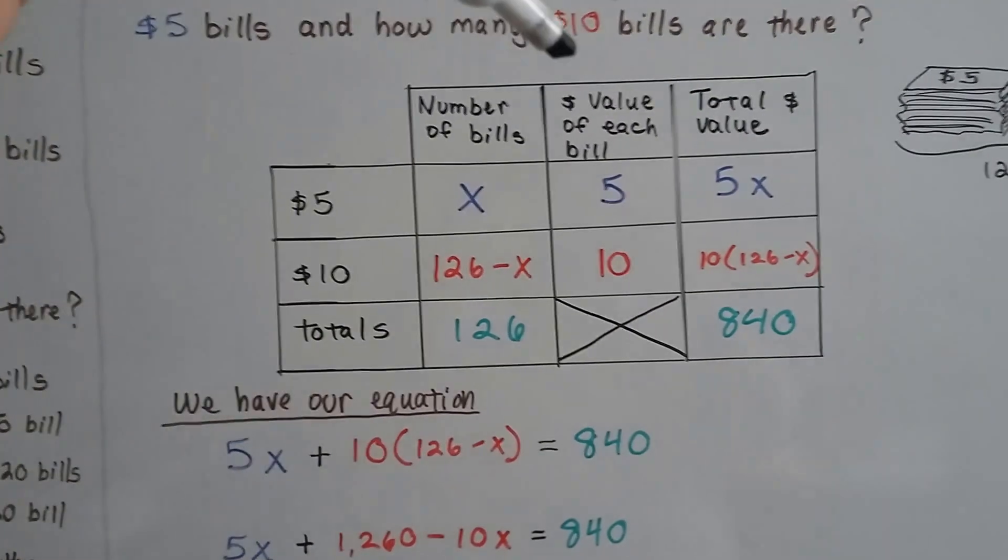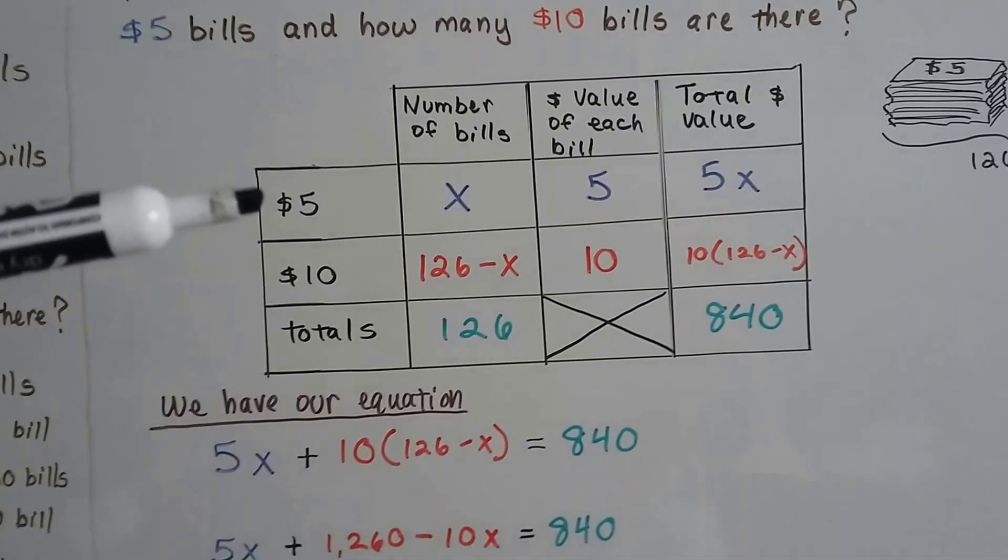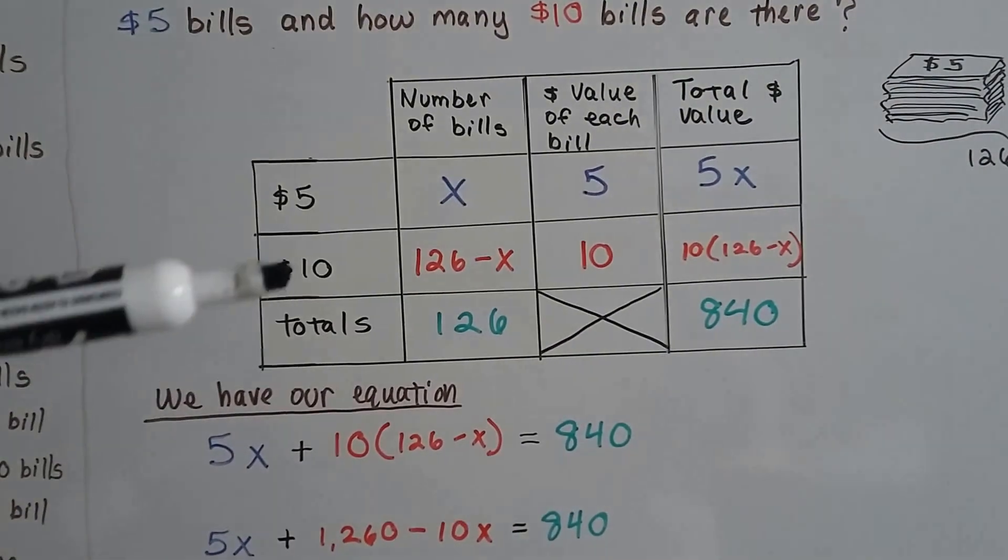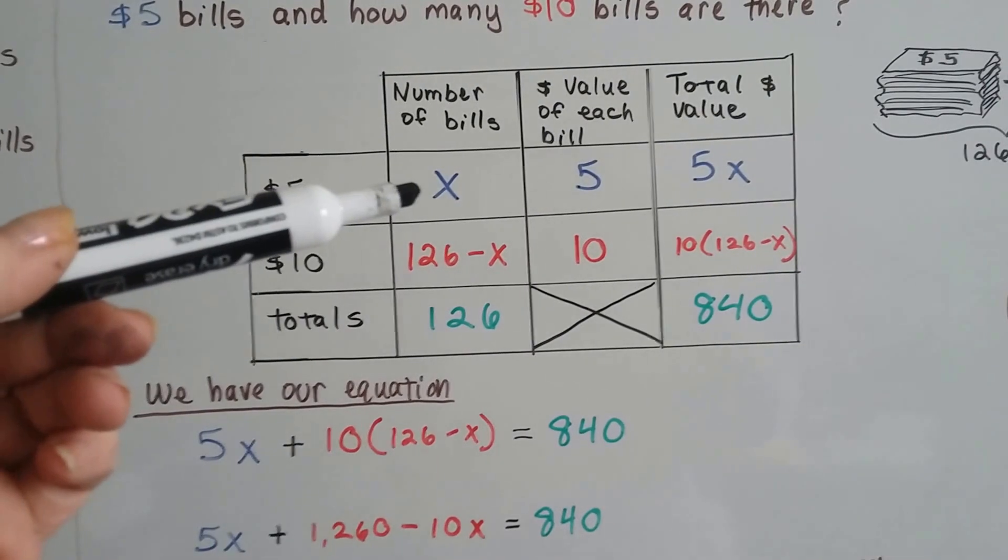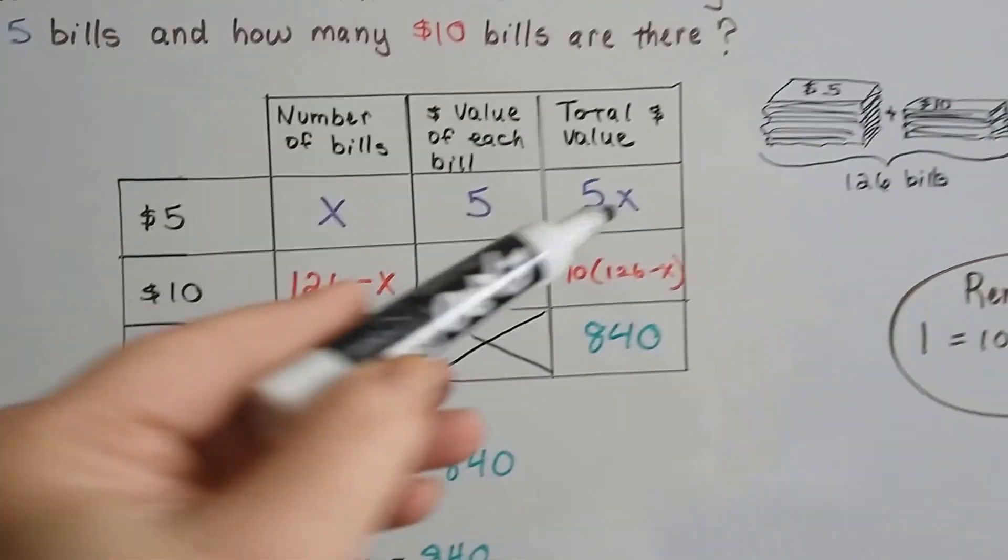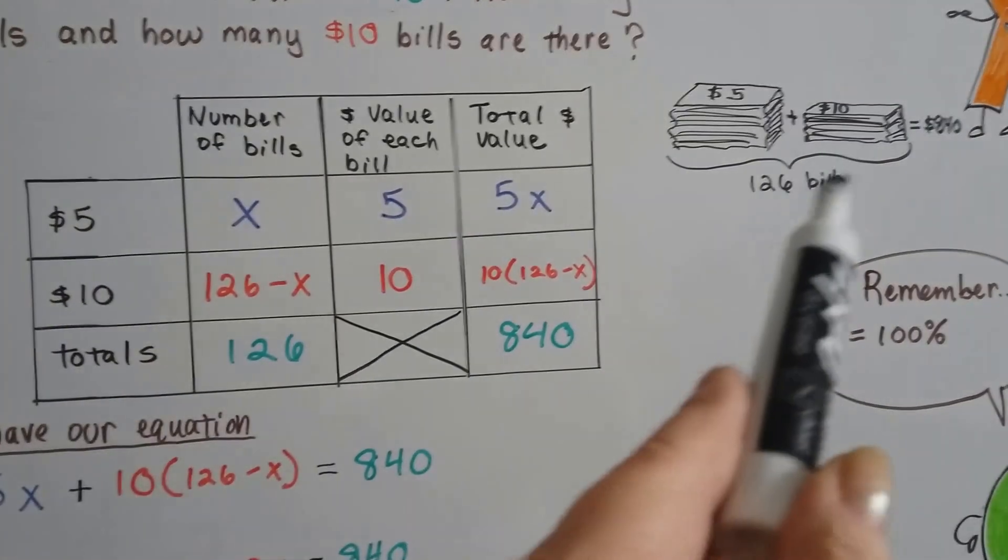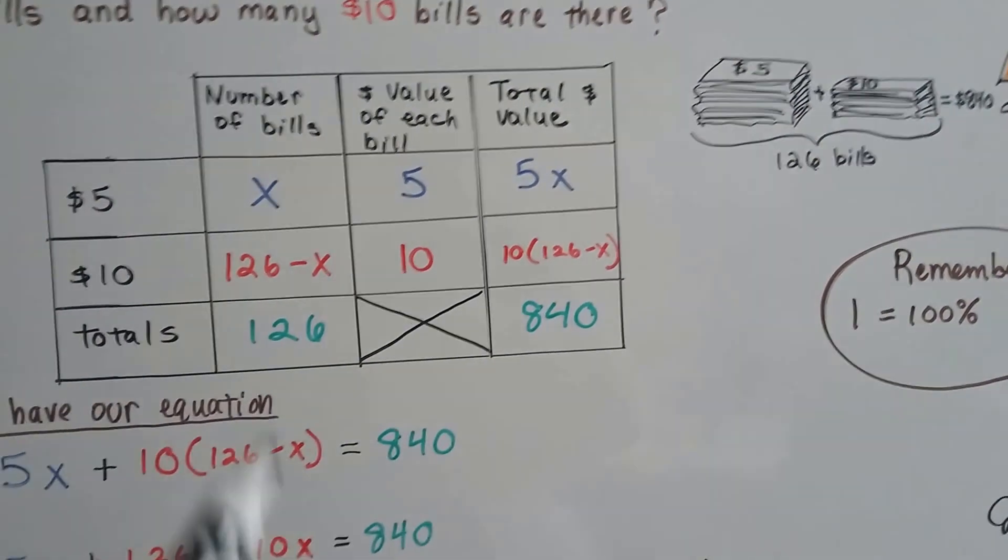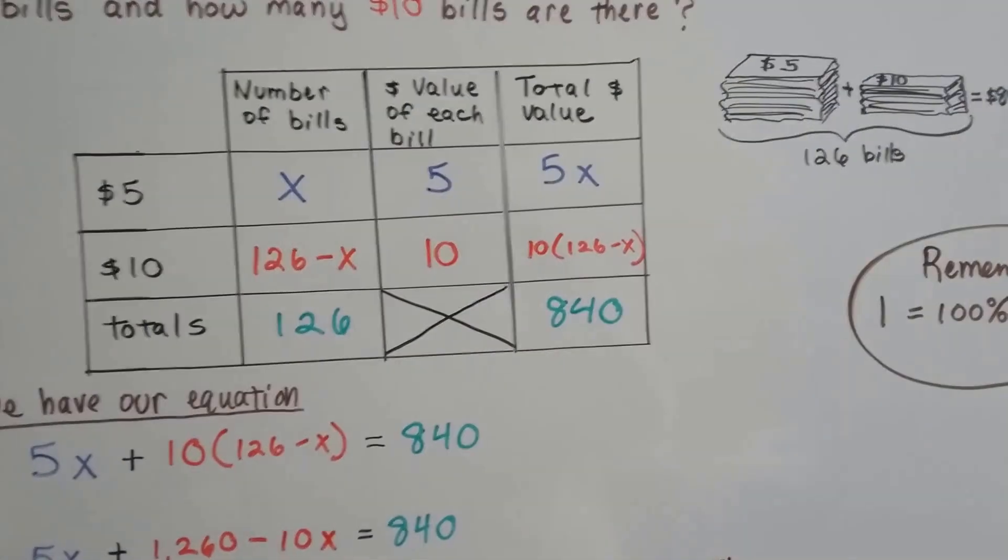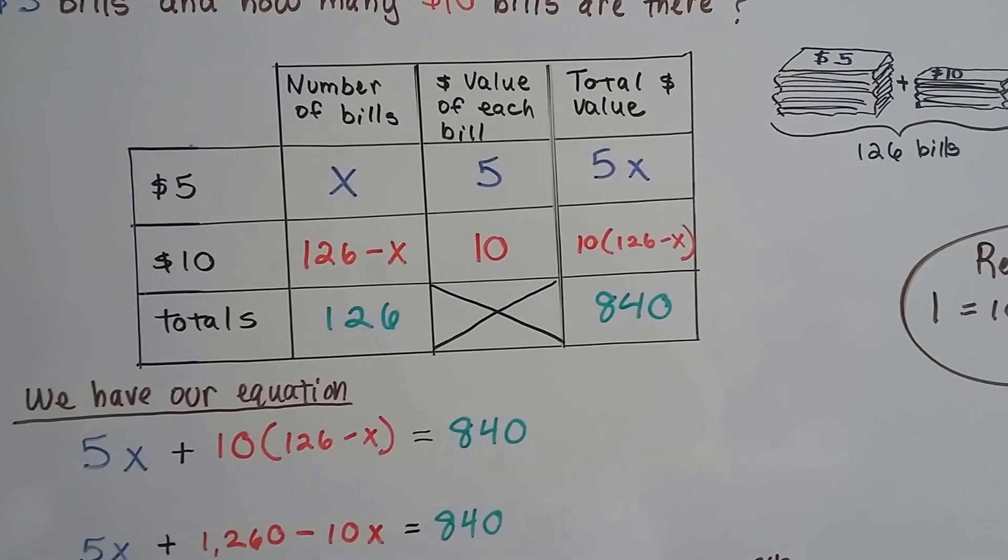We've got the number of bills, the dollar value of each bill, and then the total value. We've got our $5, our $10, and then the totals. For the $5 bills, we're going to let X be the number of bills in this pile. And because there's 126 of them, 126 minus X is going to be the pile of $10 bills. And whatever that comes out to be, it's going to total 126.